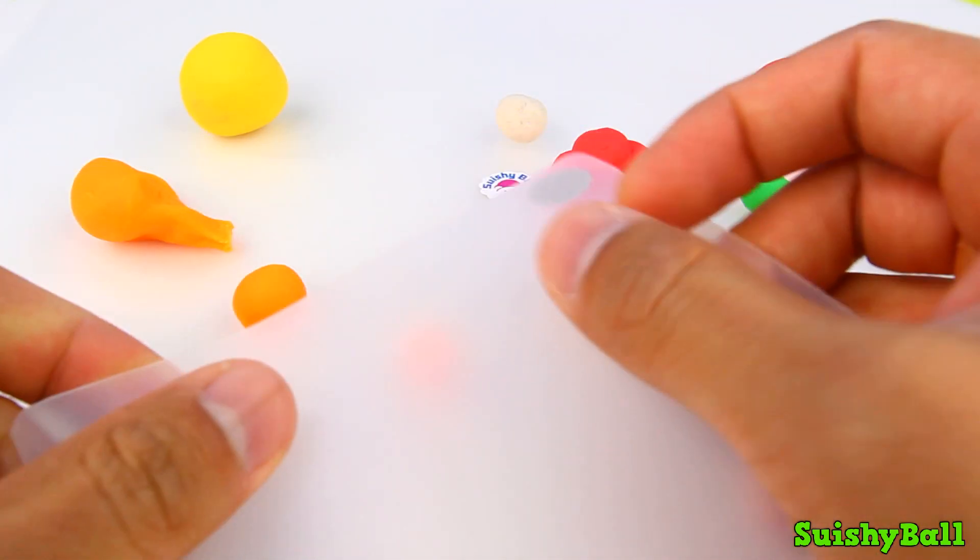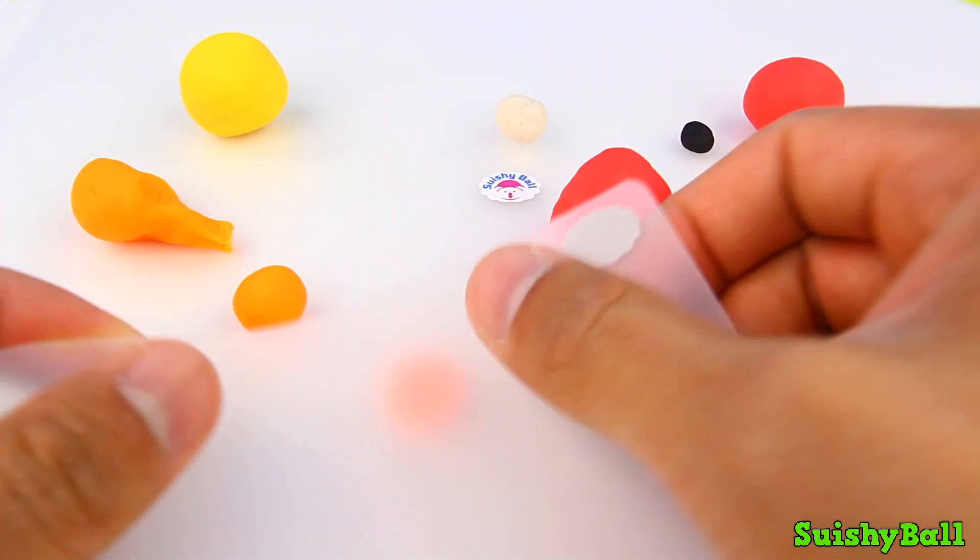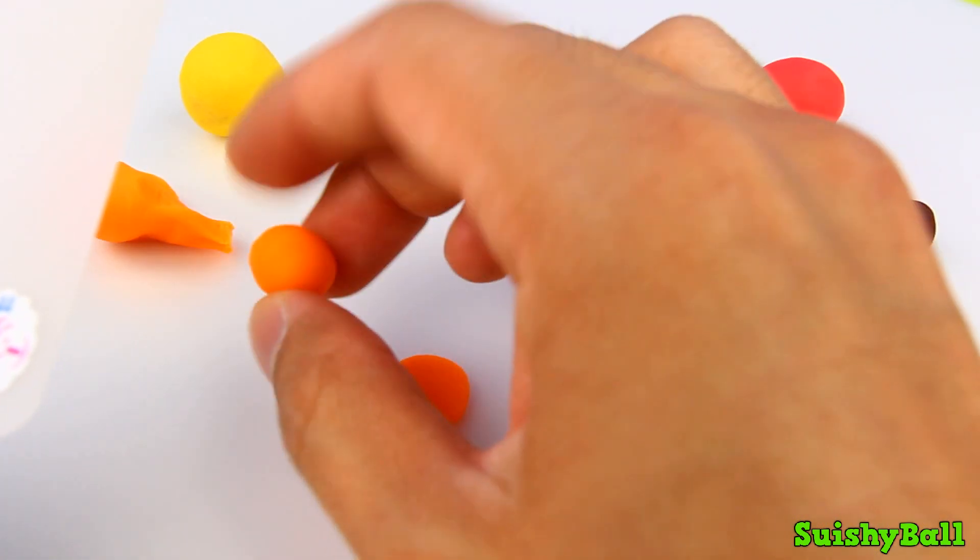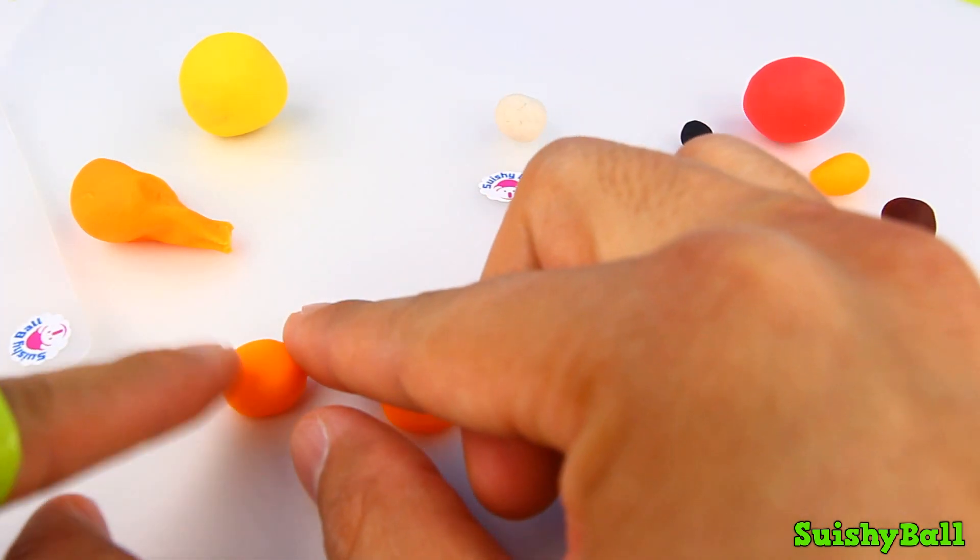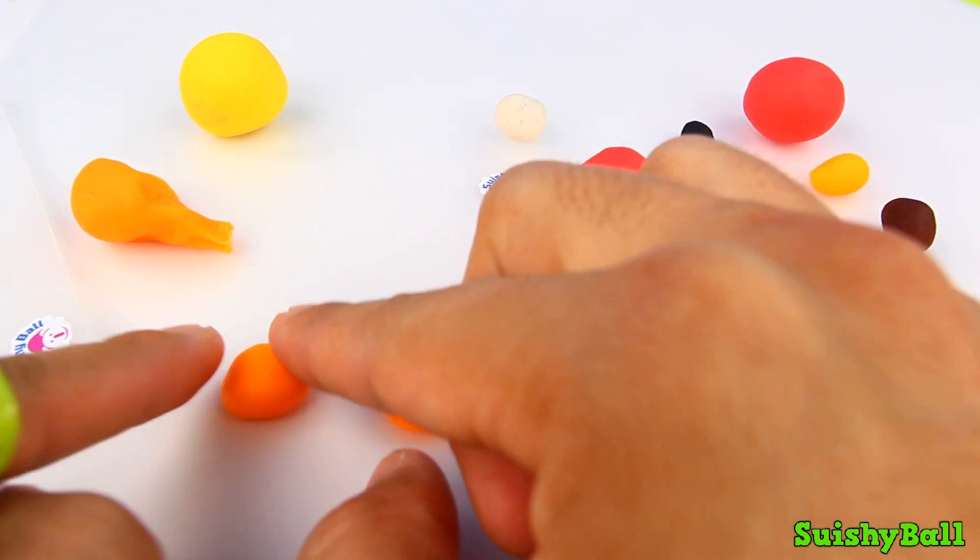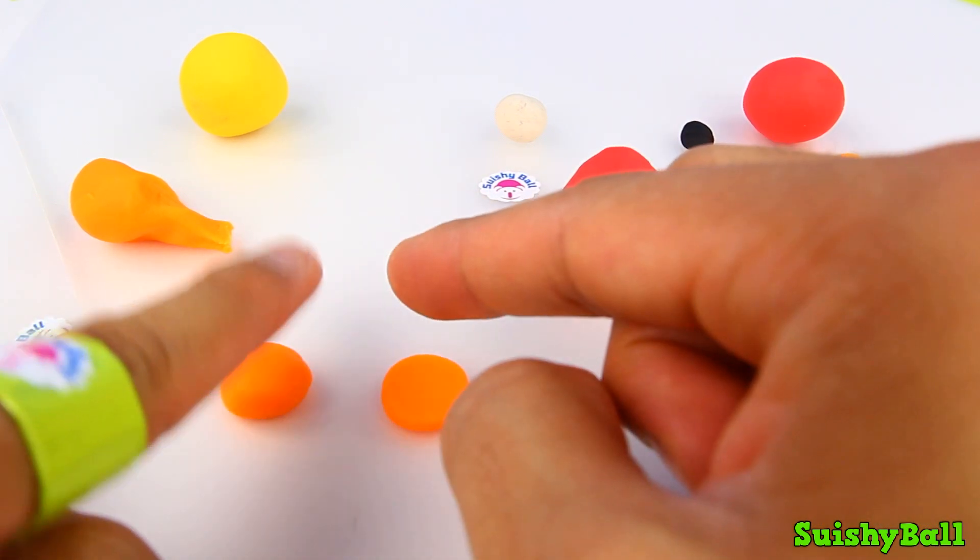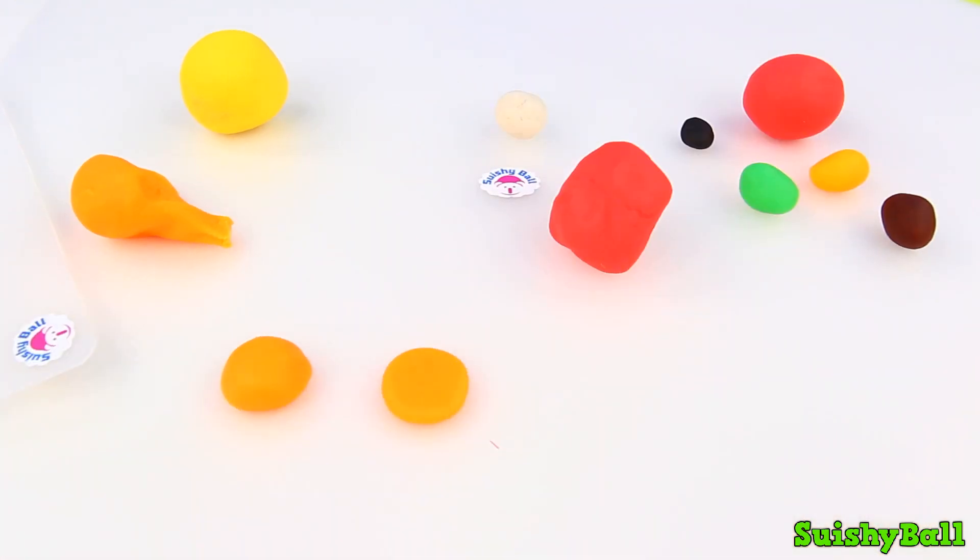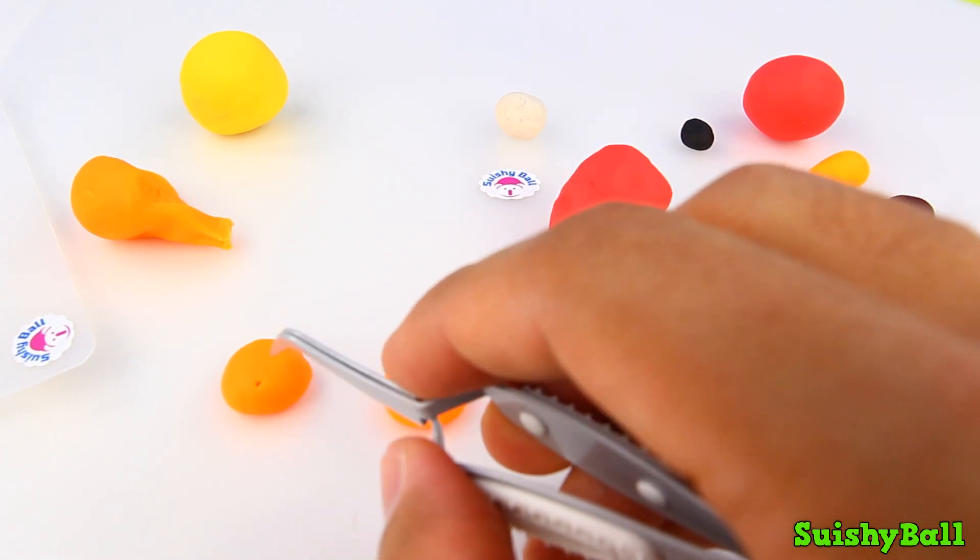Let me just flatten the bottom bun out, and then flatten the top bun out a little and then round it out just like that. And let me just use a pointed object - you can also use a toothpick.